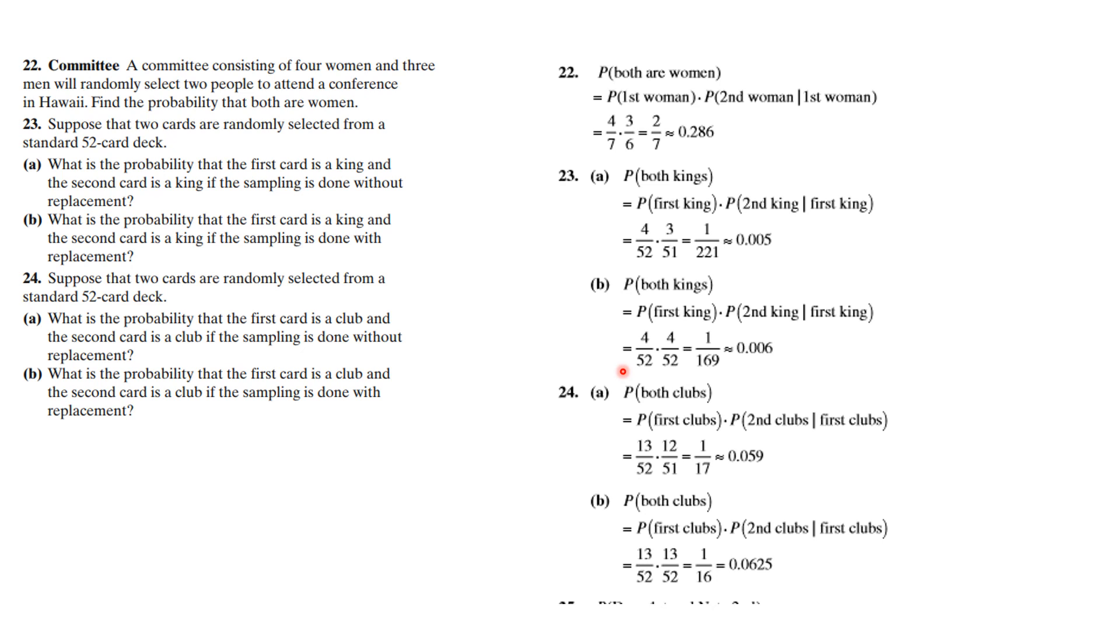In part B, with replacement, you multiply the same number together and it is a slightly different number, slightly bigger number because you replaced it. And problem 24, the probability they're both clubs is conditional probability if you get this. And the probability they're both clubs if you do replacement is a slightly bigger number.